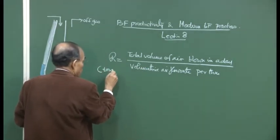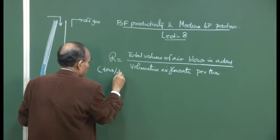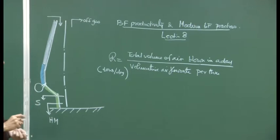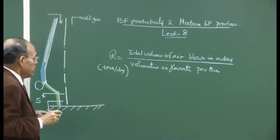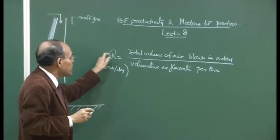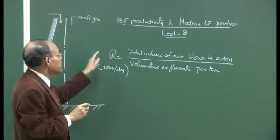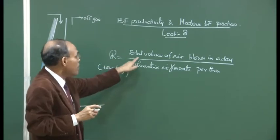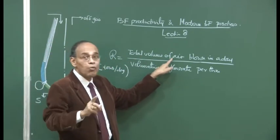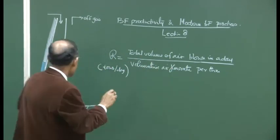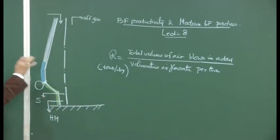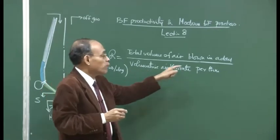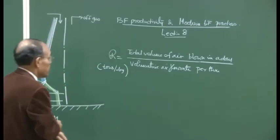It is evident that if productivity is directly proportional to R for a given blast furnace, then as R increases productivity increases. R can be increased either by increasing the total volume of air blown in a day — pumping more and more air into the blast furnace — or by decreasing the volumetric air flow rate per ton of hot metal.